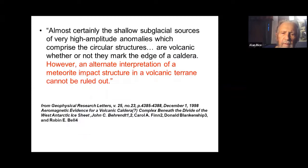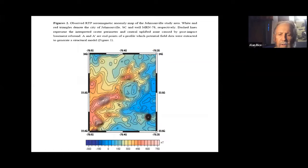They first thought it might be volcanic calderas. This by apparent John Paren—all volcanic, whether or not they mark the edge of a caldera, that was his take on it. But an alternative interpretation of a meteor impact structure in a volcanic terrain can't be ruled out. Here's another—you see the round circular entity in the middle of this blue, representing a deep magnetic anomaly. That's a known impact site in South Carolina.